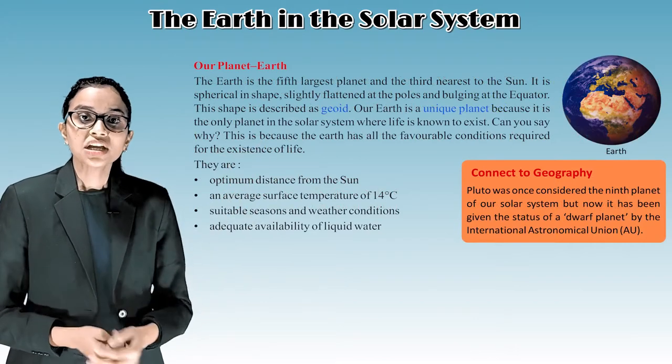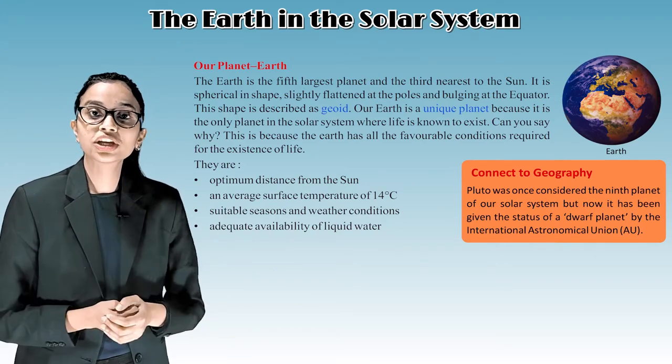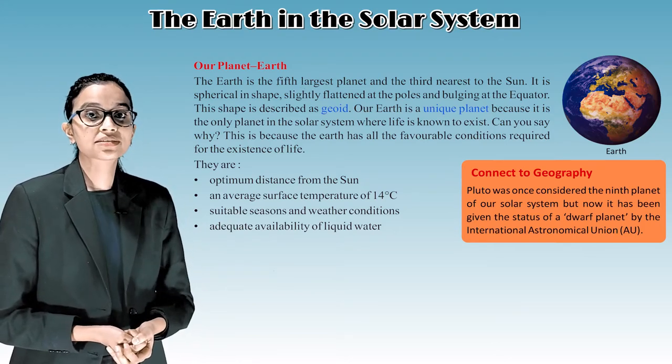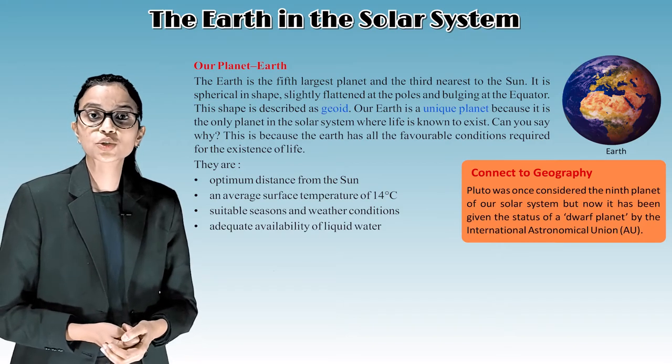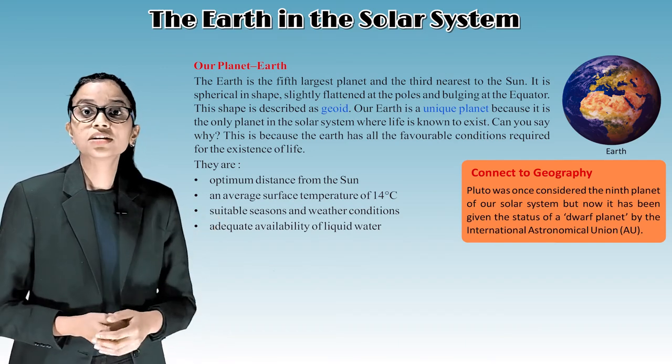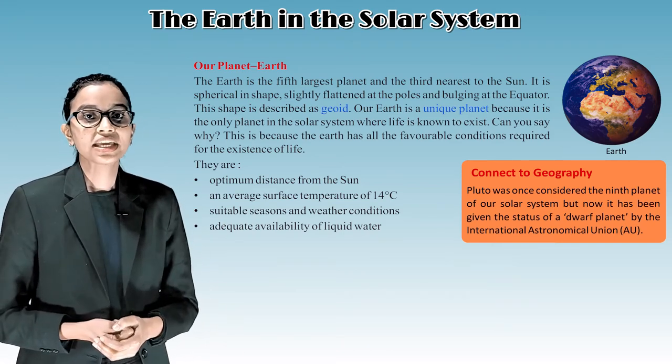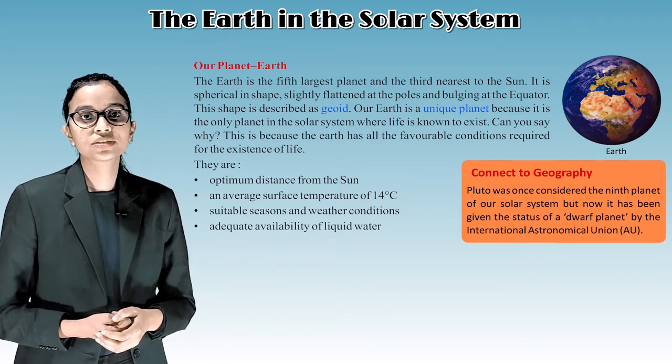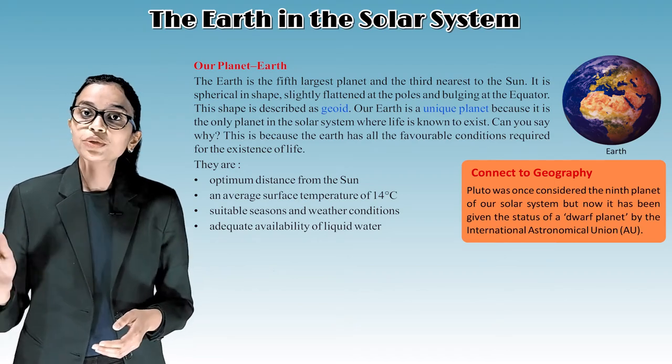Our planet Earth. The Earth is the fifth largest planet and the third nearest to the sun. It is spherical in shape, slightly flattened at the poles and bulging at the equator. This shape is described as geoid. Our Earth is a unique planet because it is the only planet in the solar system where life is known to exist. Can you say why? This is because the Earth has all the favorable conditions required for the existence of life. They are: optimum distance from the sun, an average surface temperature of 14 degrees Celsius, suitable seasons and weather conditions, and adequate availability of liquid water.